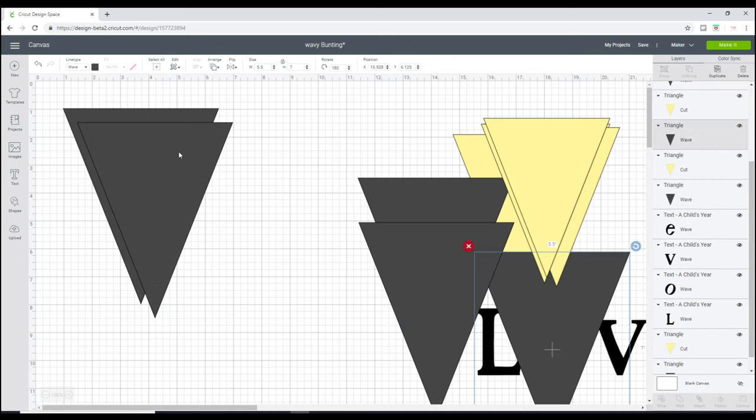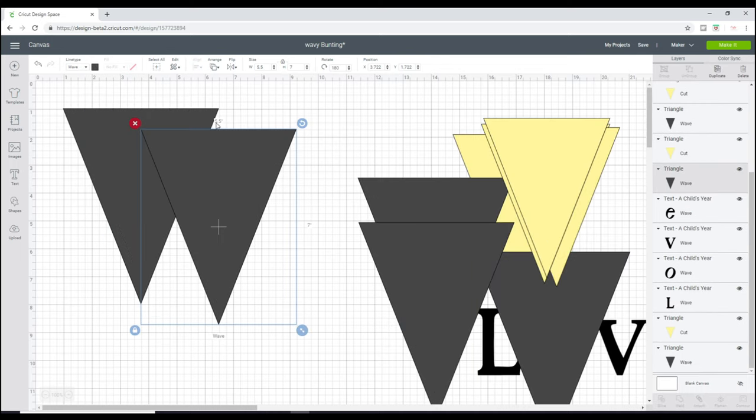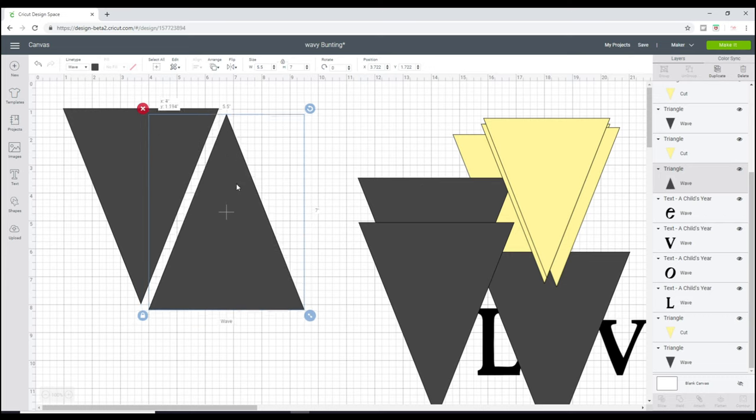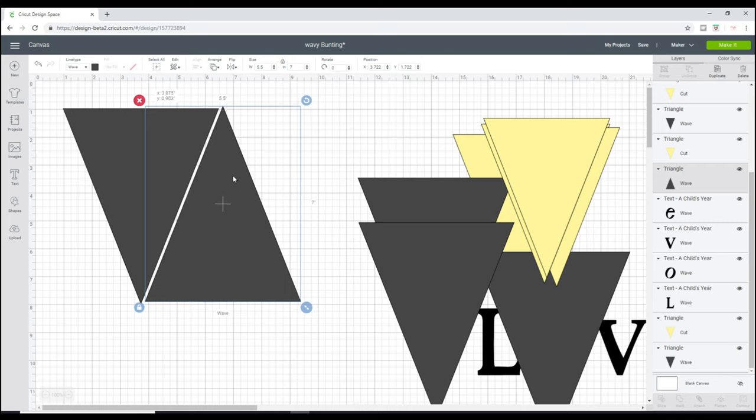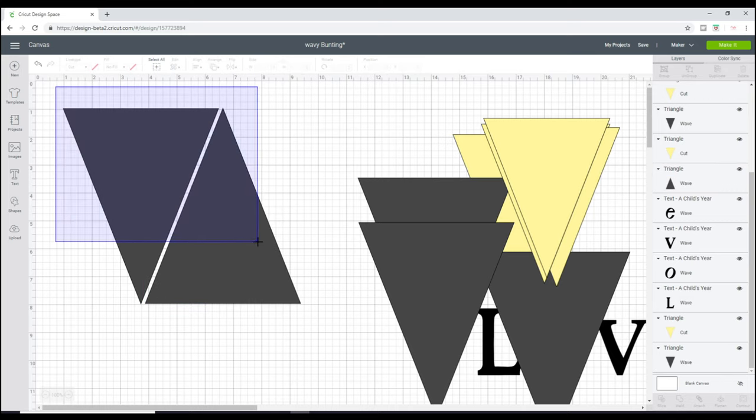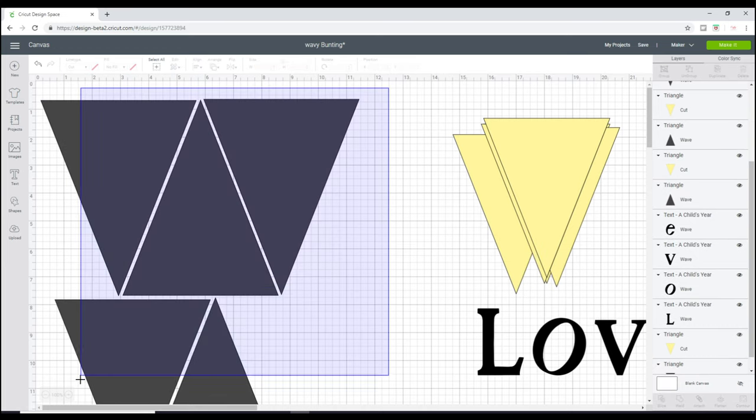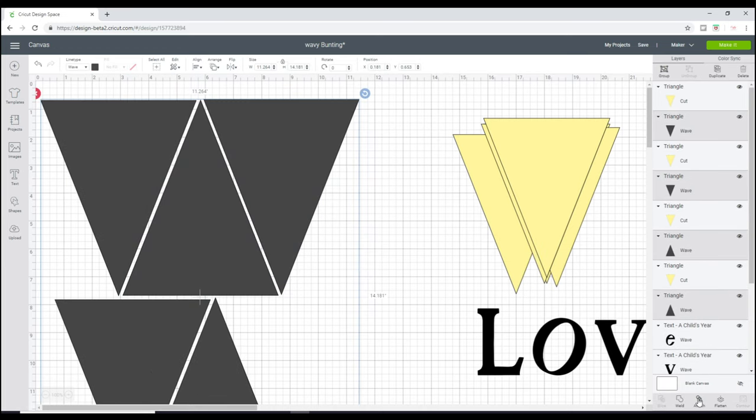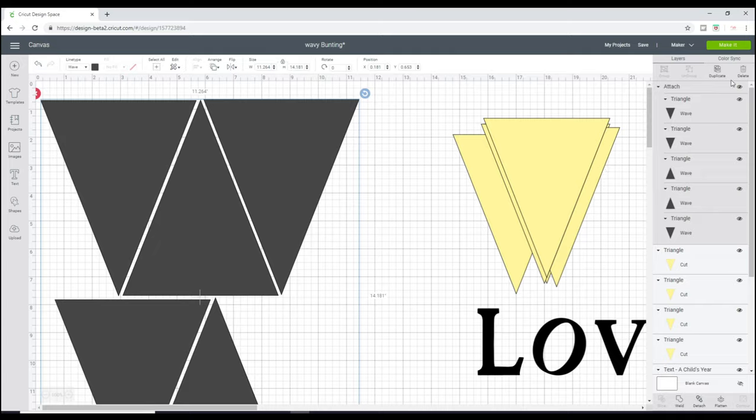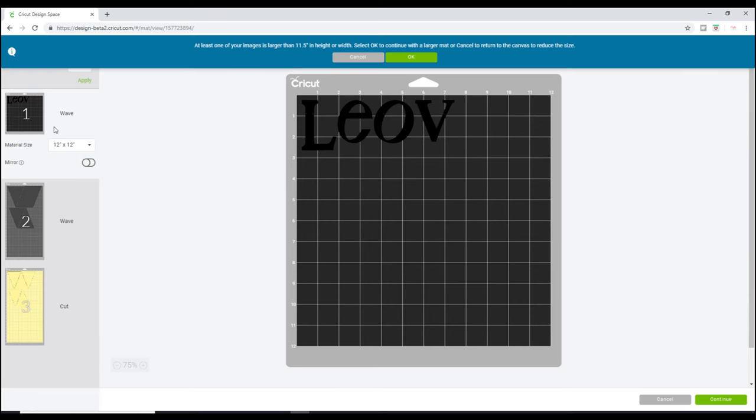Then I'm going to highlight that and duplicate it five times, so I've got five pieces of bunting. I don't want to get the most out of my fabric, so I'm just going to flip them and arrange them so that I can get the most out of my fabric piece.